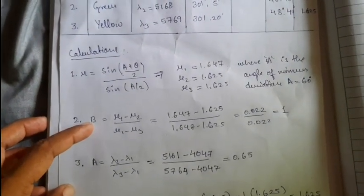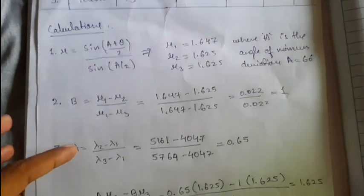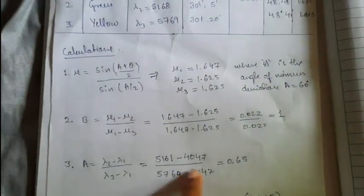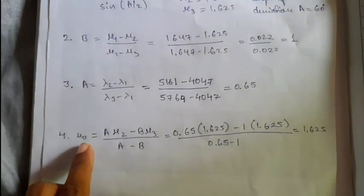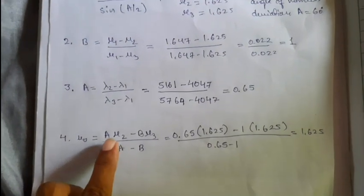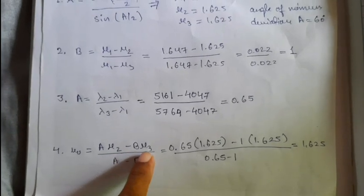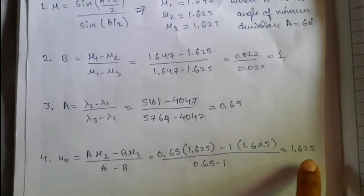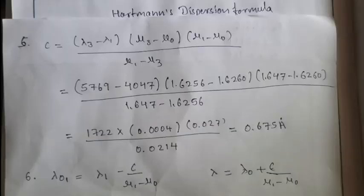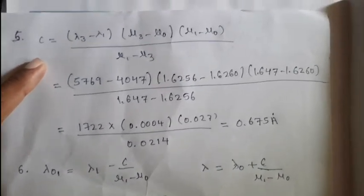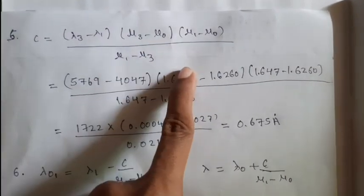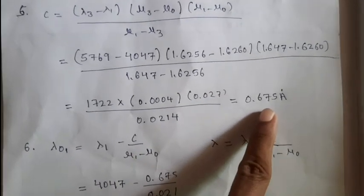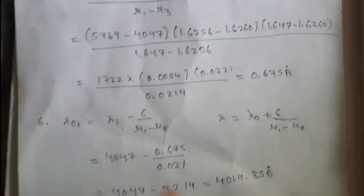First, calculate constant b with the help of the refractive index values, and then calculate constant a with the help of wavelength values. Once you get the values of constants a and b, calculate mu 0 with the formula: a into mu 2 minus b into mu 3, divided by (a minus b). Then calculate constant c — substitute all the values of lambda, mu, and mu 0. The value of constant c is 0.679 Angstroms.